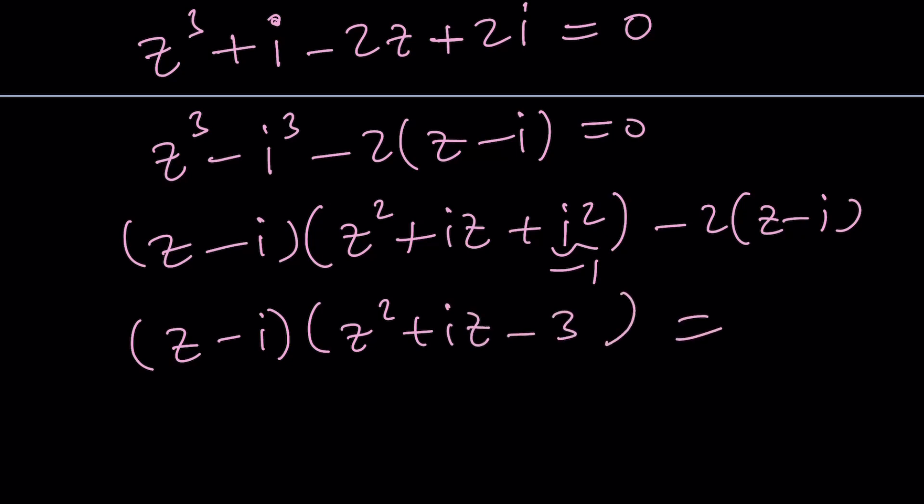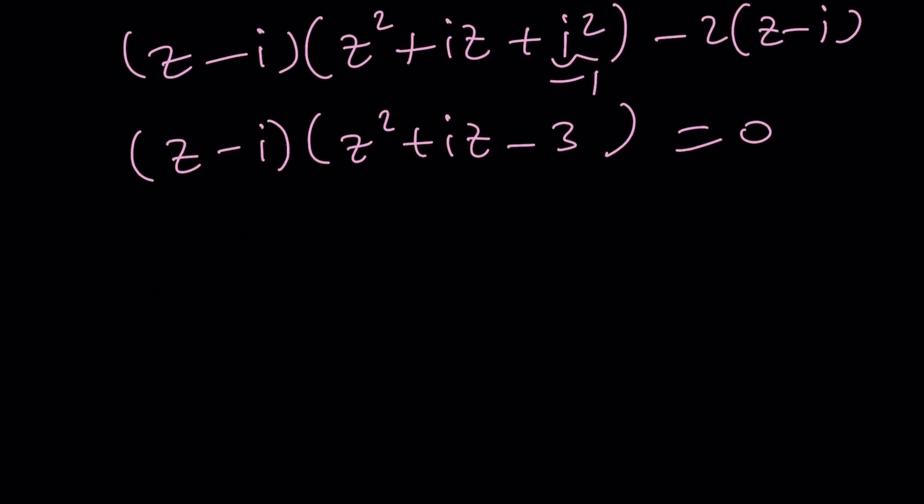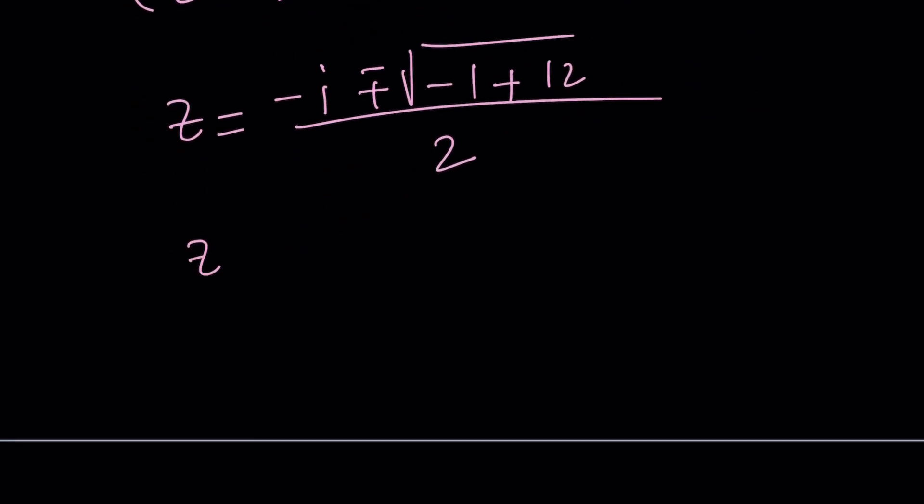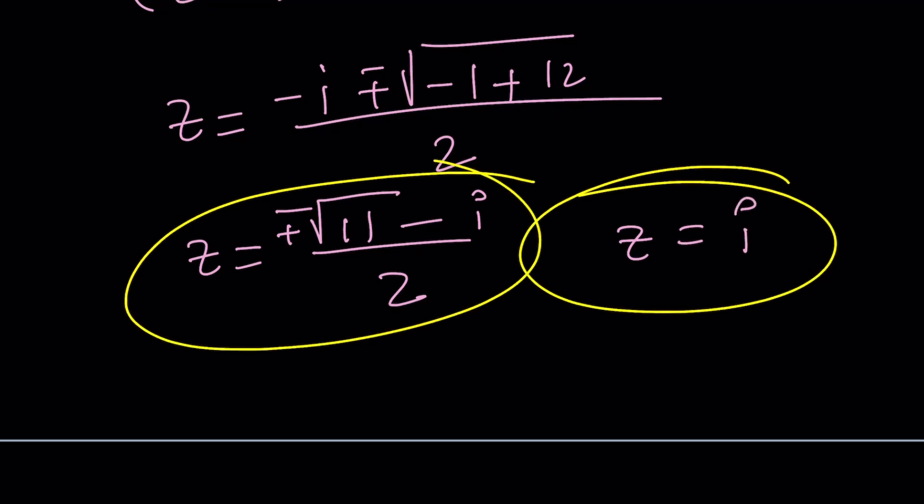And from here, you're not only finding one solution, which is z equals i, but also the other ones. Z equals negative b plus minus the square root of b squared, which is negative 1, plus 4ac, which is 12. And that's going to be actually the square root of 11, which is real. So z is going to be square root of 11 with a plus minus sign minus i over 2. And of course, z equals i is another solution. So this gives you all the solutions of this cubic equation.